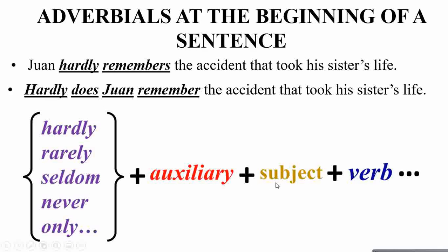So when 'hardly' has been placed at the beginning of the sentence, it is followed by the auxiliary which agrees with the rest of the sentence tense, and then comes your subject, then your verb, and then the rest of the sentence construction. Pause your video and make a note: when you have written your adverbials at the beginning, they should be followed by the auxiliaries, then the subject and verb come afterwards.